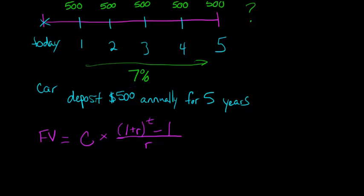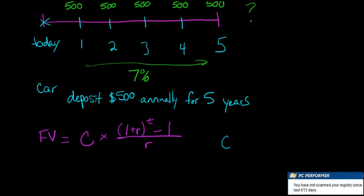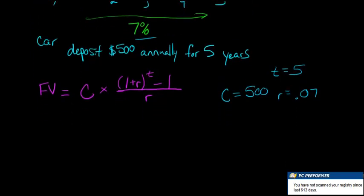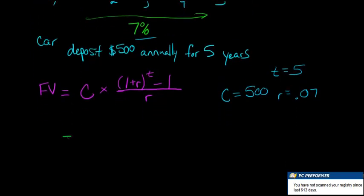Now what we do is, we're just going to plug in. We know C to be 500, and we know R, it's 7%, but we have to put that in terms of a decimal, so we'll say .07. And then we know T is 5, so all we do is just plug these numbers in. Let's go ahead and plug this in, and let's solve and see what our future value is.